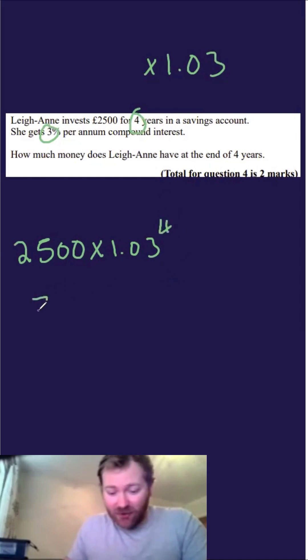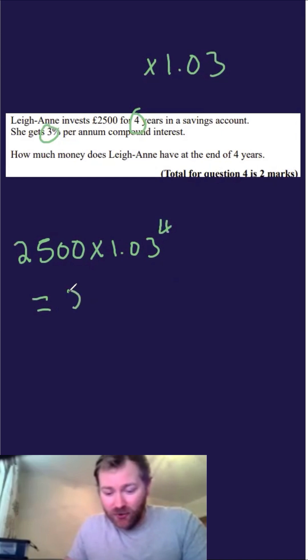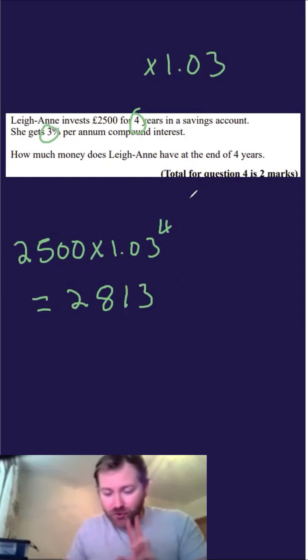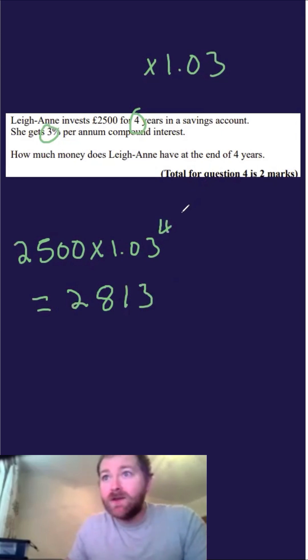And we're literally just going to put this straight into our calculator, which gives £2,813. Now, because it's in pounds, we need to round to two decimal places. This is £2,813.77.